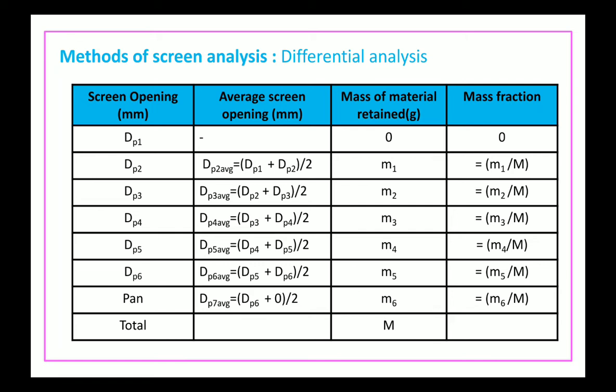The pan is a base container of similar size to the screens but with no pores — it is a flat impervious metal surface. Whatever material passes through the last screen is entirely retained on the pan. Therefore, the opening of the pan is considered as 0, so the average size for material on the pan is dp6 plus 0 divided by 2. The mass of material retained on each screen is noted, the sum of all retained masses equals the total sample mass, and using the formula mass fraction equals individual mass divided by total mass, the mass fraction is calculated.